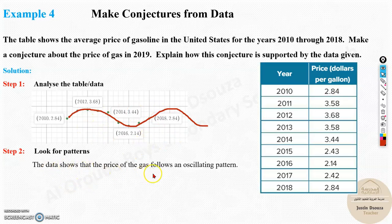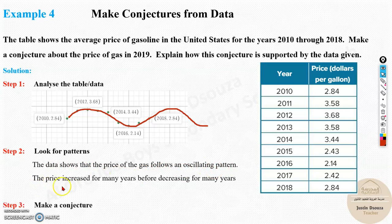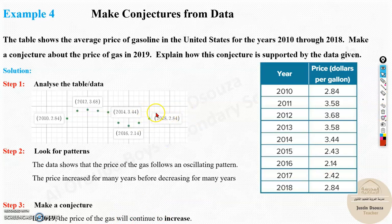The data shows an oscillating pattern. The price increased for many years before decreasing for many years. The conjecture for 2019 is most likely that it will increase. Why? 2019 would be just over here. After increasing, then it might decrease again. So that is our conjecture.